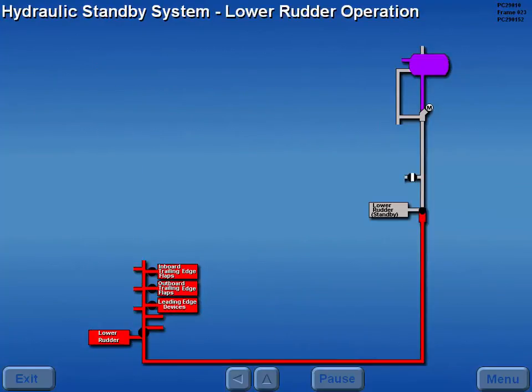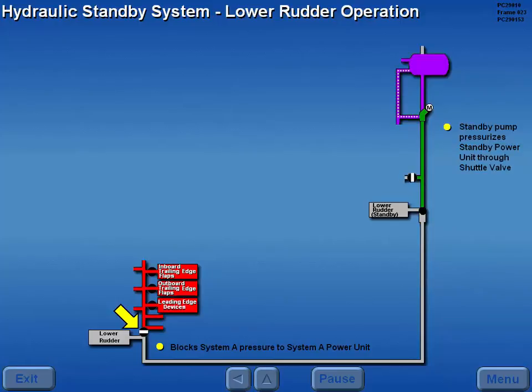When the standby rudder system is activated to power the lower rudder, System A pressure is blocked to the lower rudder System A power unit and an electric standby power unit through a shuttle valve.